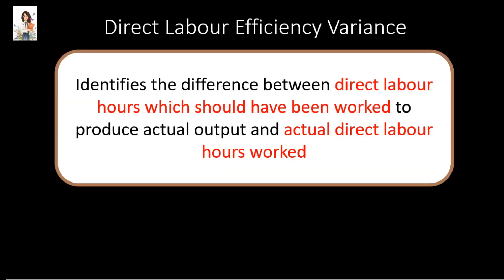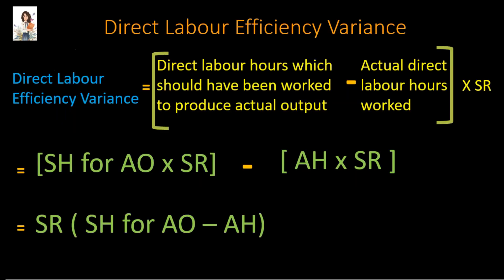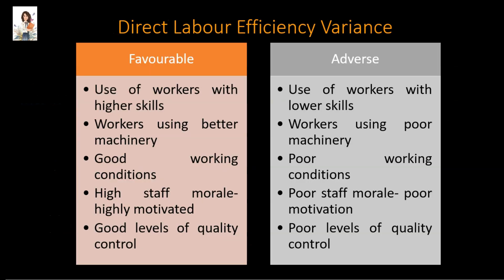The direct labor efficiency variance identifies the difference between direct labor hours which should have been worked to produce the actual output and the actual direct labor hours worked. The formula is: standard labor hours for actual output of finished goods minus actual labor hours, the whole thing multiplied by standard wage rate. A favorable direct labor efficiency variance could be due to use of workers with higher skills, workers using better machinery, good working conditions leading to higher staff morale, or good levels of quality control.